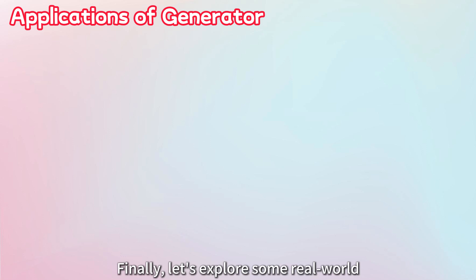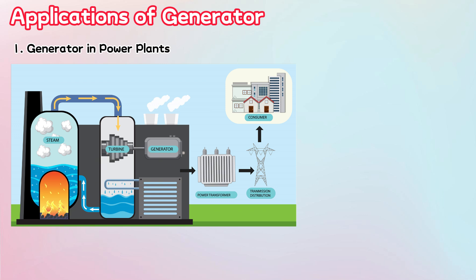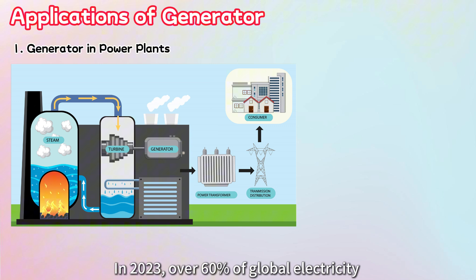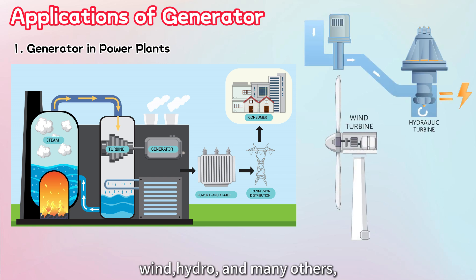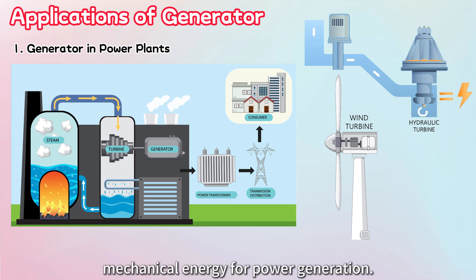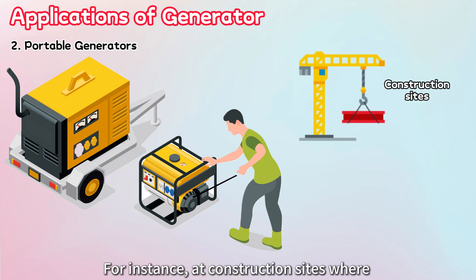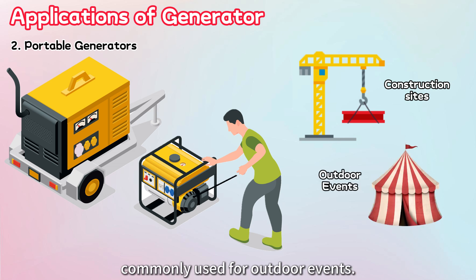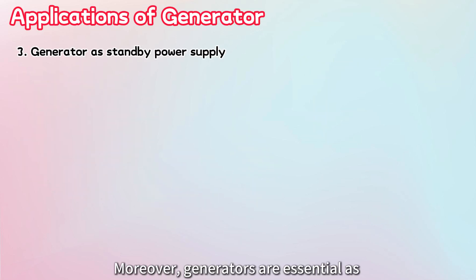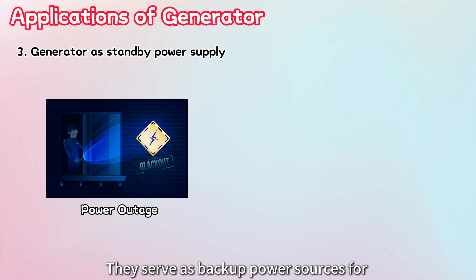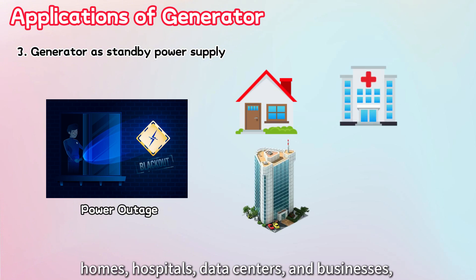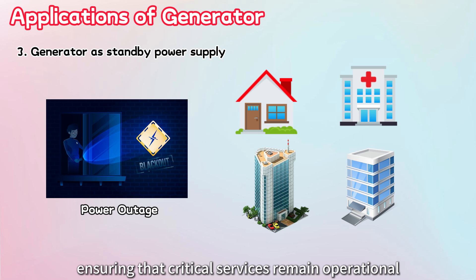Let's explore some real-world applications of generators. Large-scale generators are vital in power plants, supplying the electricity we rely on for our everyday activities. In 2023, over 60% of global electricity was still generated using fossil fuels such as natural gas and coal. Other alternative energy sources like wind, hydro, and many others are also harnessed to provide mechanical energy for power generation. Generators also provide portable power solutions, making work possible in remote areas — for instance, at construction sites where grid electricity is not available. They're also commonly used for outdoor events. Moreover, generators are essential as standby power supplies during outages, serving as backup power for homes, hospitals, data centers, and businesses, ensuring critical services remain operational when the main power grid fails.